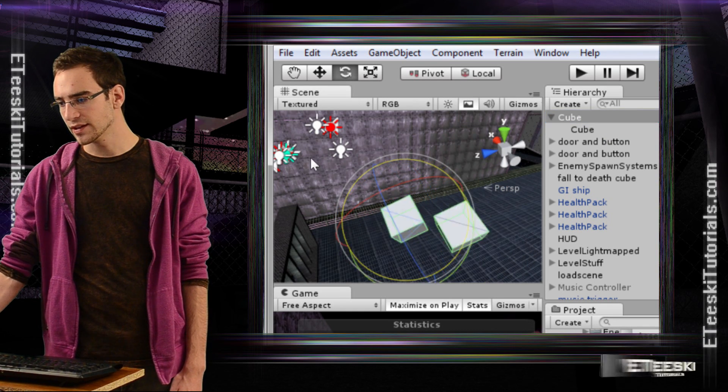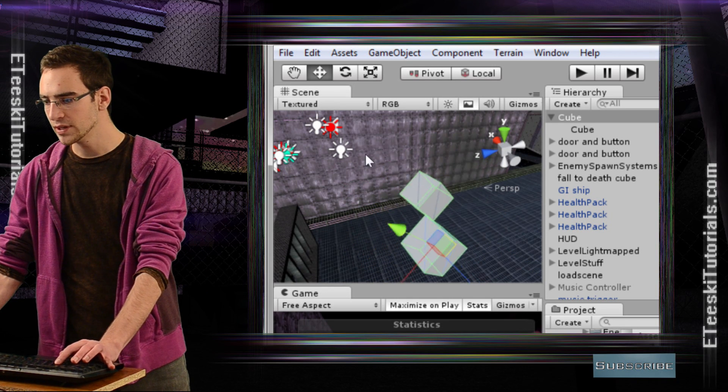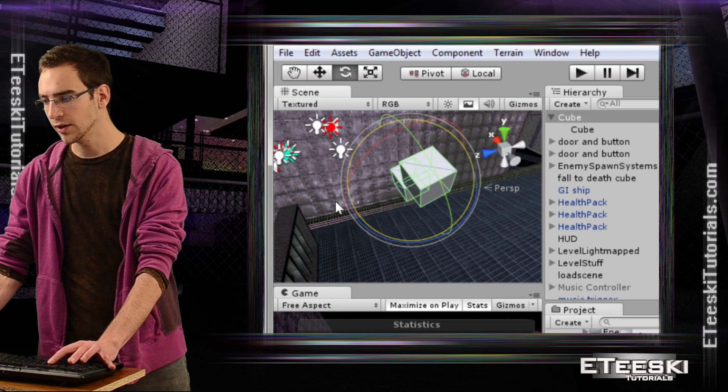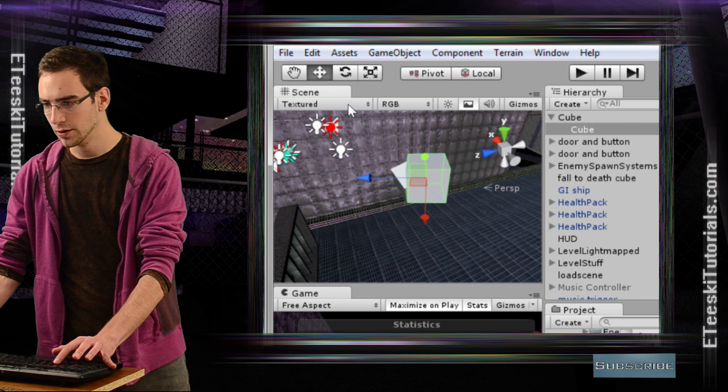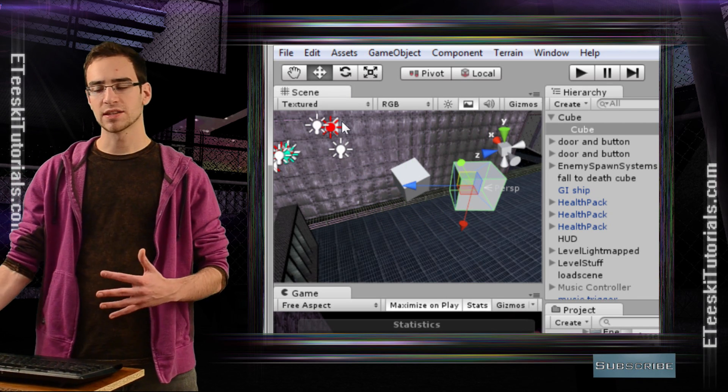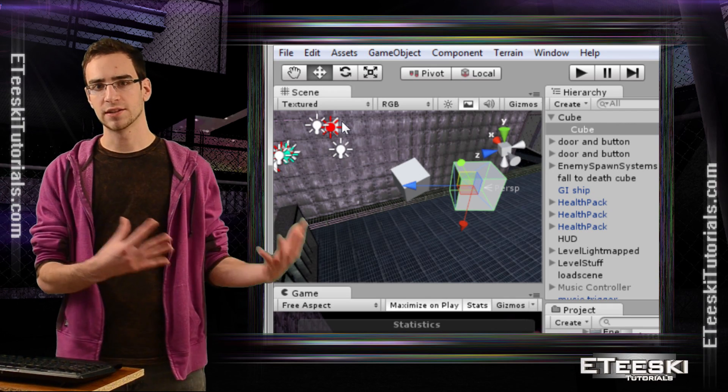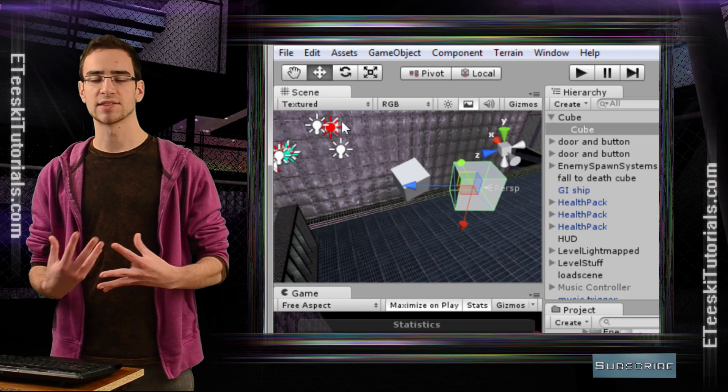When we take the parent and say rotate it or move it, that child game object is always going to follow. But when we take the child game object and say rotate it or move it, it doesn't affect the parent because the position and rotation of the child doesn't affect the parent. But the position and rotation of the parent does affect the child.